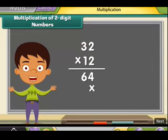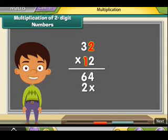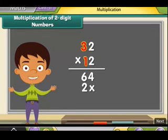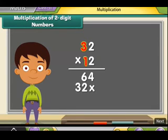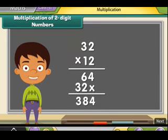Step 3: mark a cross below 4. Step 4: multiply 2 by 1 and place the 2 below 6. Multiply 3 by 1 and place the 3 to the left of 2. Now add these two numbers. The answer is 384.